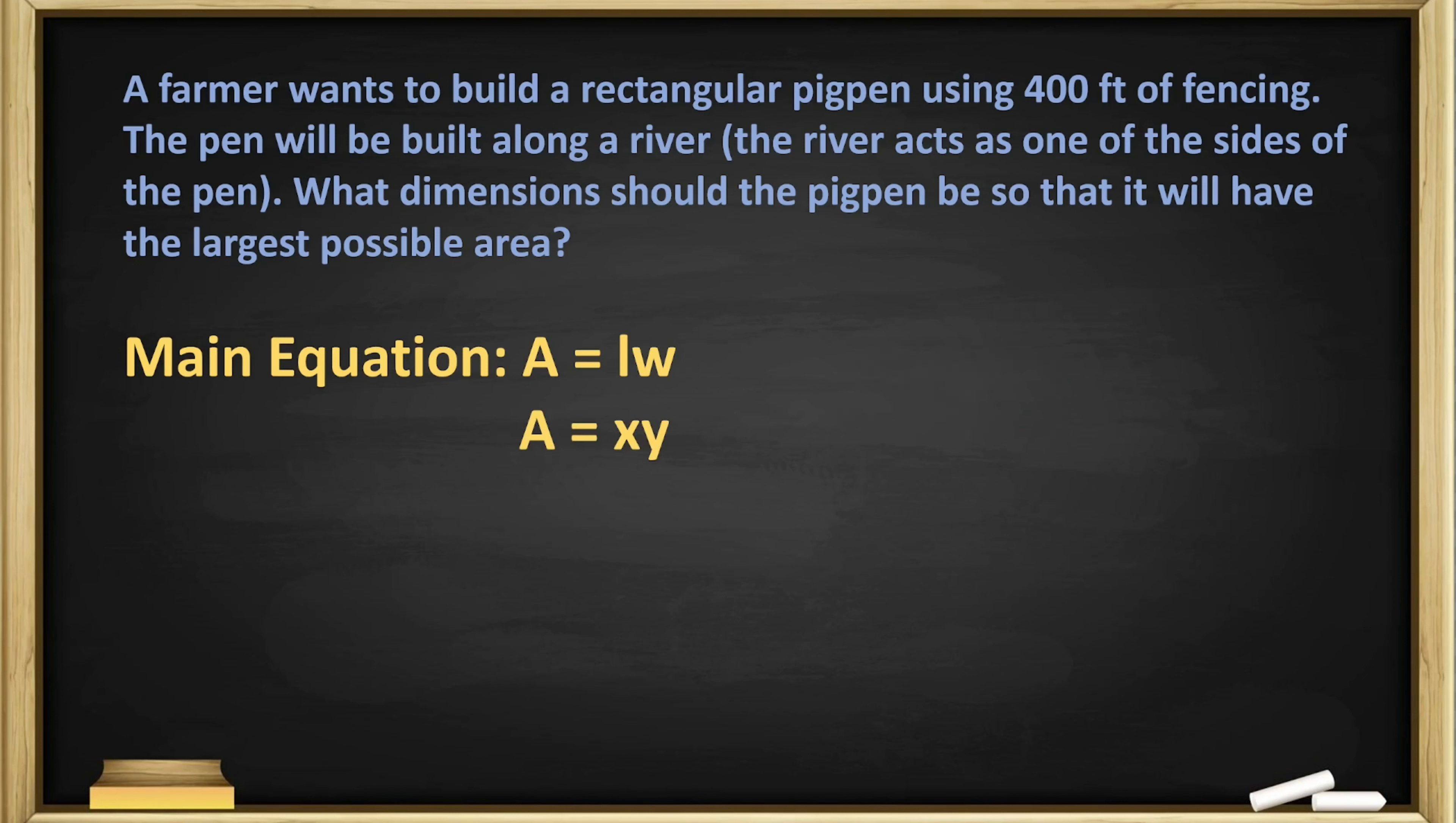What about the secondary equation? Let's do a diagram. Here we have a river and we got the fence. Let's say that the sides are x's and the bottom side is the y. And they tell us that there is 400 feet of fencing, which means the sum of the x's and y all together should equal 400.